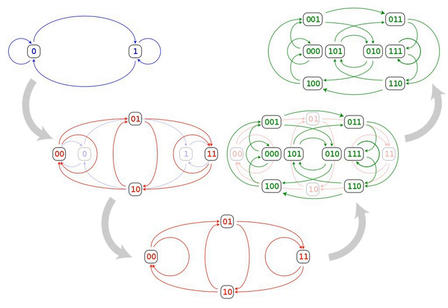Given a graph G, its line graph L is a graph such that each vertex of L represents an edge of G, and two vertices of L are adjacent if and only if their corresponding edges share a common endpoint, that is, are incident in G. It is the intersection graph of the edges of G, representing each edge by the set of its two endpoints.